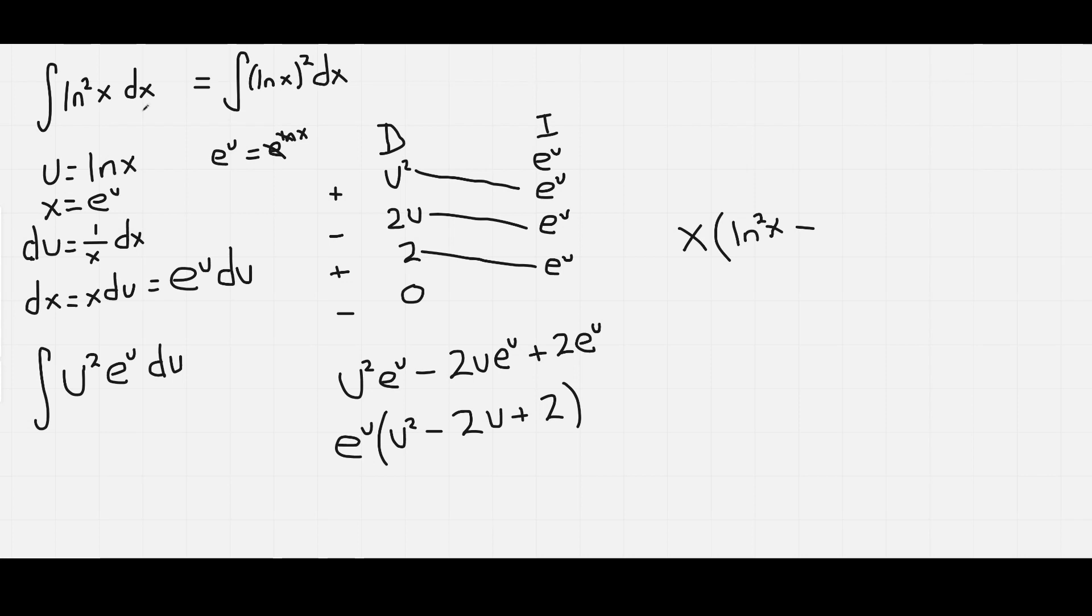Minus 2u, again u is ln x, so that's 2 ln x, and plus 2 is just 2. And that is it. So we'll add the plus C, and that is the answer. Thank you for watching, bye!